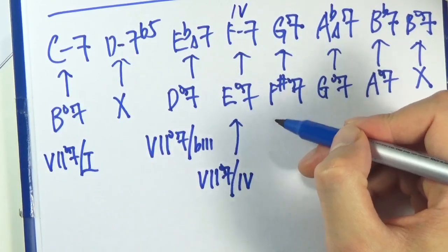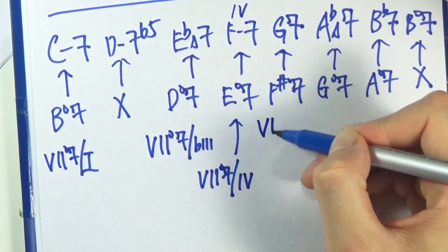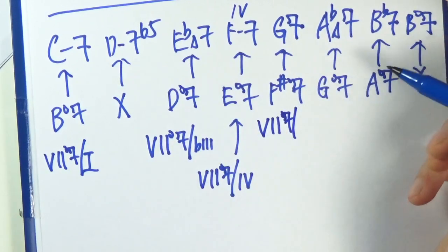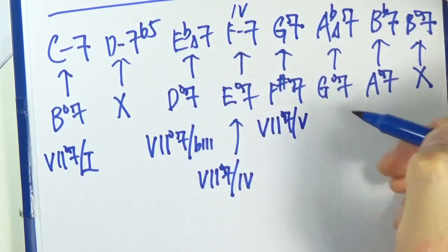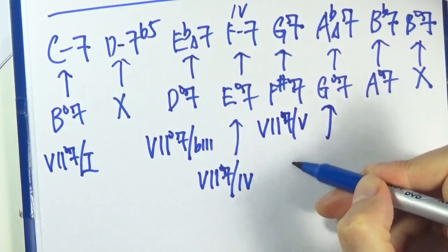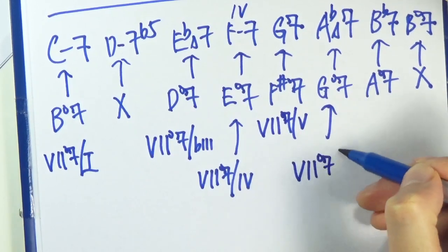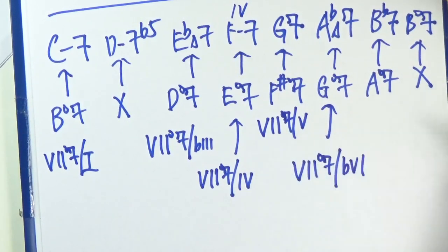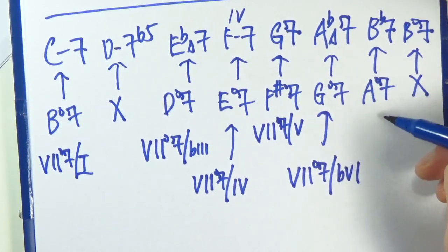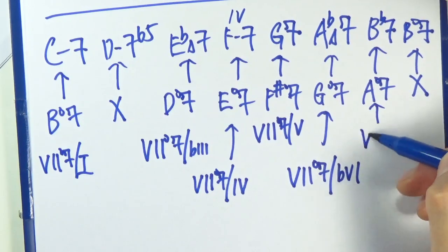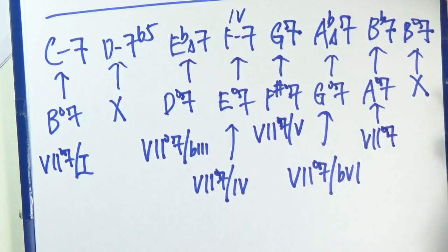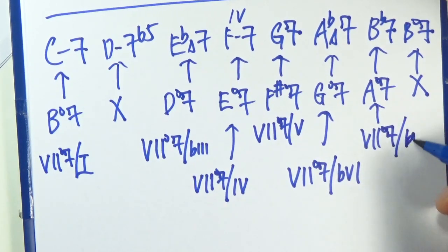And this is 7 diminished 7 of 5. This is the 7th of 7 of flat 6, and this is the 7 diminished 7 of flat 7.